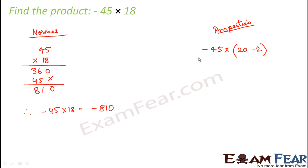Now which property do you remember? This is distributive property of multiplication over subtraction. So as per distributive property, this is equal to -45 × 20 - (-45) × 2.